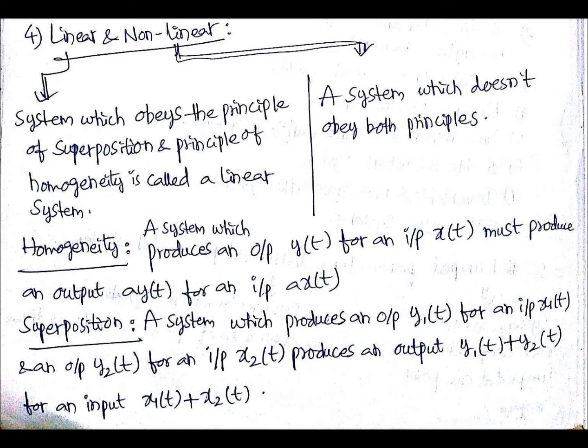When can you say the system is obeying the superposition principle? If a system produces an output y1(t) for an input x1(t), and also an output y2(t) for an input x2(t), then if it produces an output y1(t) + y2(t) for an input x1(t) + x2(t), we can say that it is obeying the superposition principle.